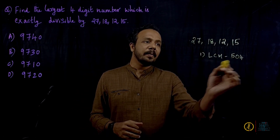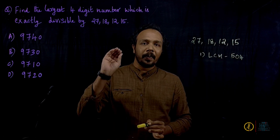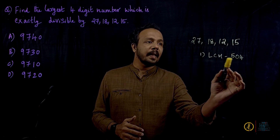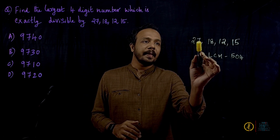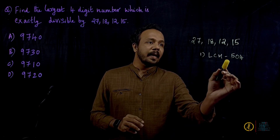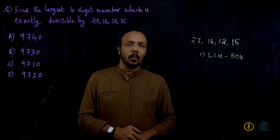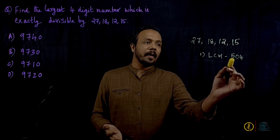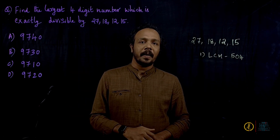What we have done is: we take the LCM to divide into the number. That number can divide into the LCM — that is the rule. If you divide by these numbers, that number can divide into the LCM. If we divide by the LCM, that's the answer.